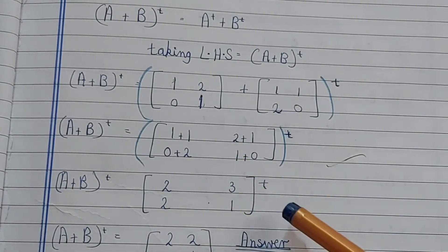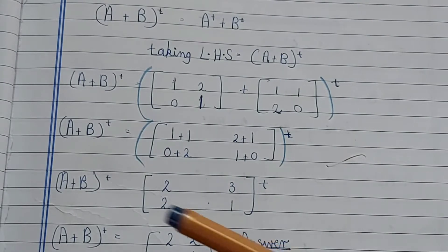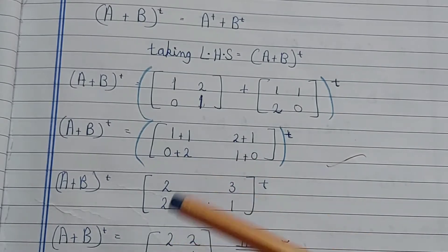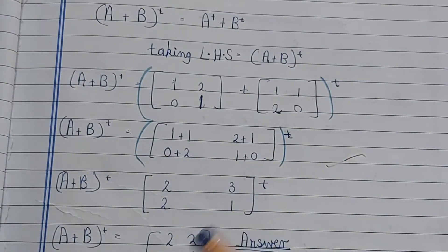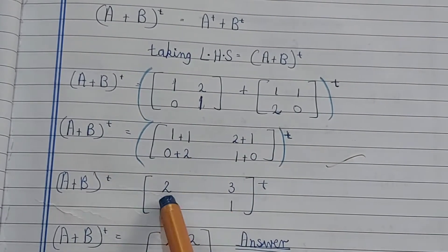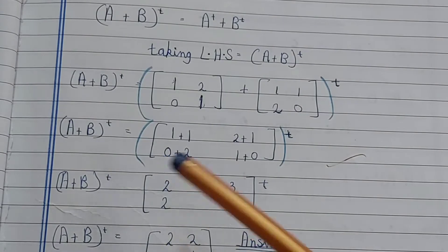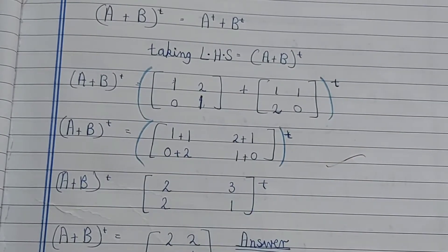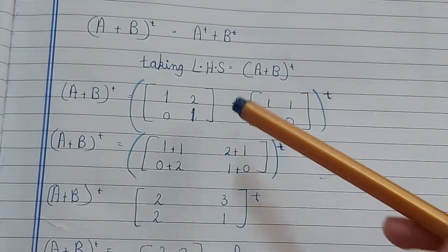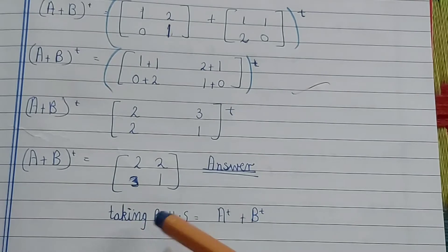Now we take the transpose of [2,3;2,1]. Transpose means we change rows to columns and columns to rows. Row [2,3] becomes column, row [2,1] becomes column. So the transpose gives us [2,2;3,1]. This is our left-hand side answer: [2,2;3,1].